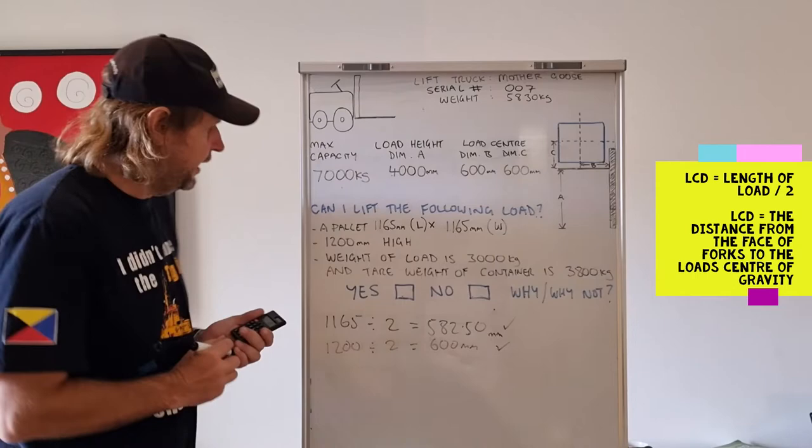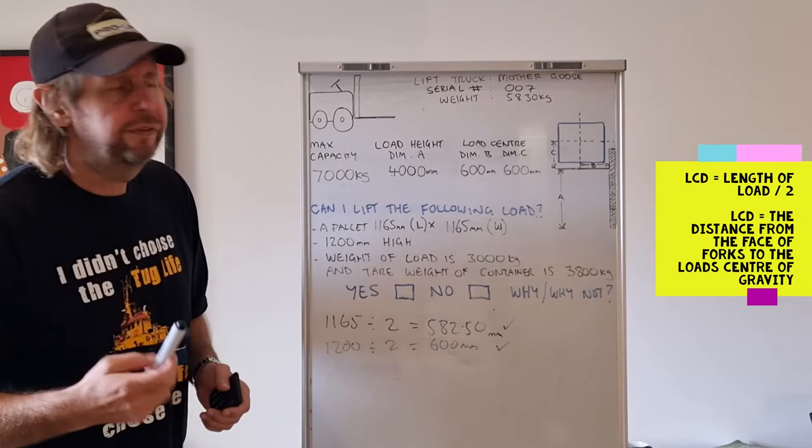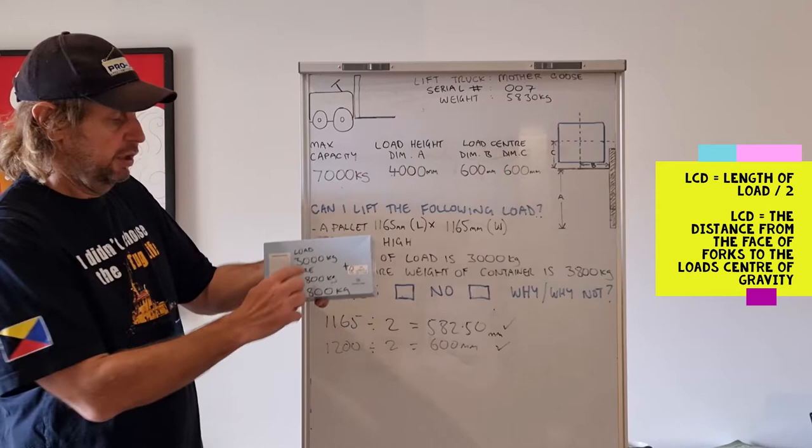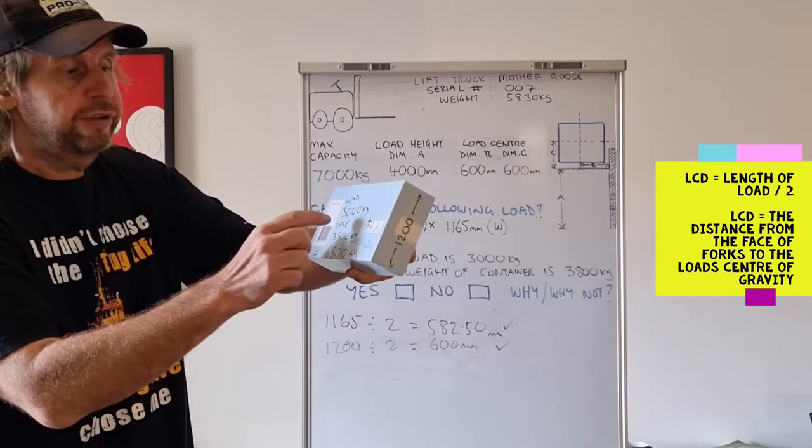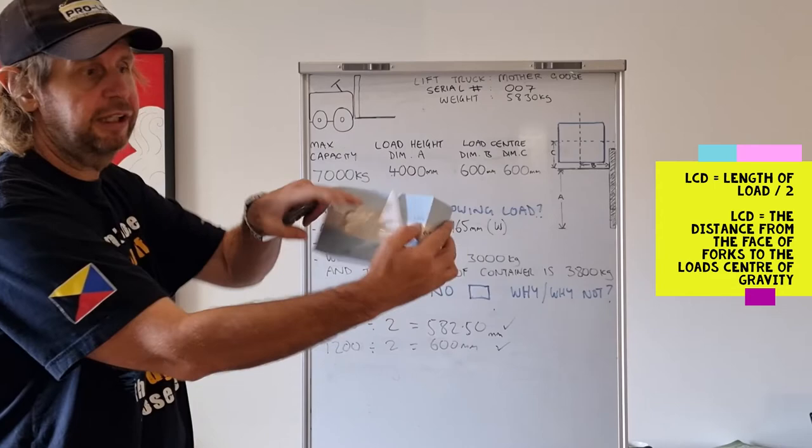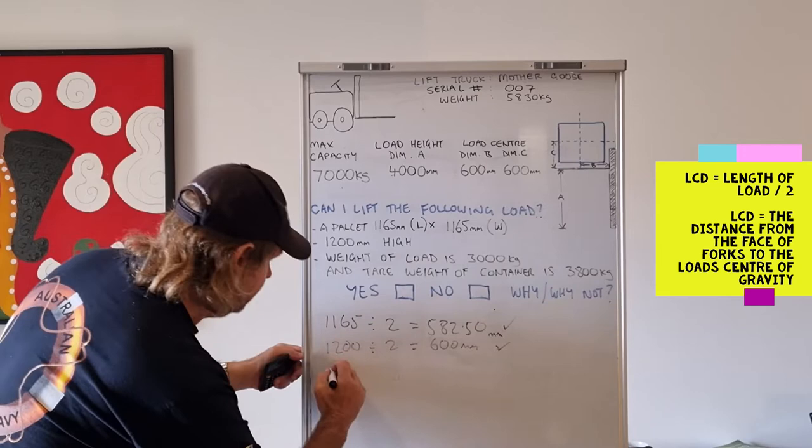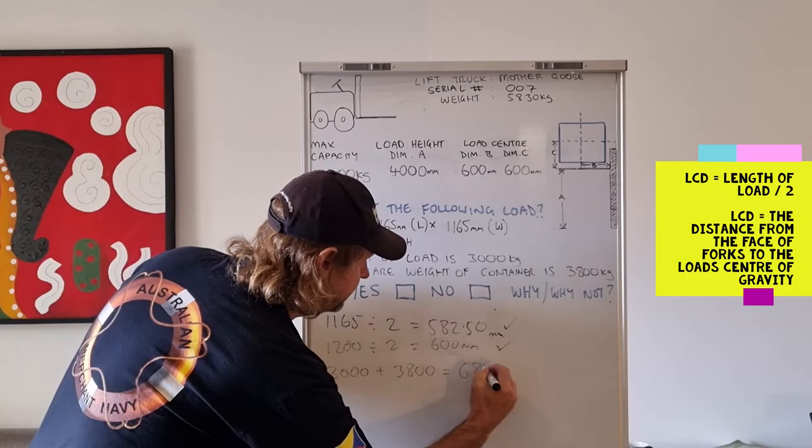And then we need to work out whether the weight - the weight of the load is 3,000 kilos and the tare weight of the container is 3,800 kilos. So some people get a little bit confused with tare weights and stuff like that. The tare means just the weight of the container. The weight of the load is the stuff inside the container. So let's look at this tissue box. The load is 3,000 kilograms. The tare is 3,800 kilograms. The total is the load plus the tare equals 6,800. So the load can be the tissues, 3,000 kilos. The tare can be the tissue box, 3,800 kilos. Total 6,800 kilos. So let's punch this in down here. So 3,000 kilos plus 3,800 equals 6,800 kilograms. So we can lift that load.